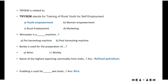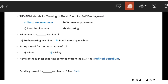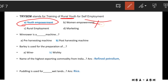TRYSEM stands for Training of Rural Youth for Self-Employment. The correct option is youth empowerment — not women empowerment, rural employment, or marketing. So TRYSEM is related to youth empowerment.